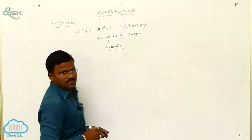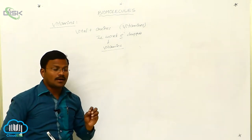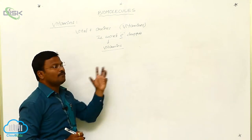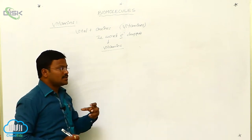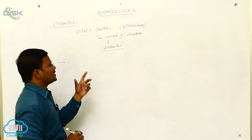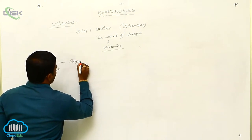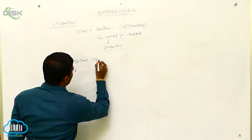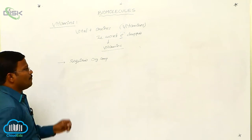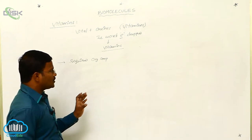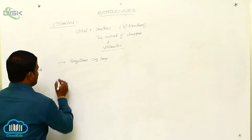Here we learn what vitamins are. It has been observed that some organic compounds named as vitamins are required for the biological functions of living organisms. If these vitamins are absent in our food or diet, some diseases may occur in living organisms. So vitamins are required organic compounds needed to regulate biological functions of living organisms.